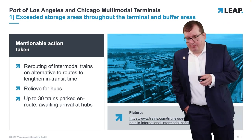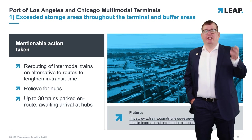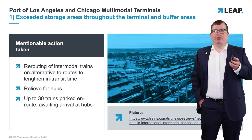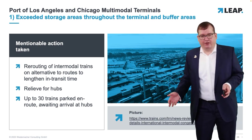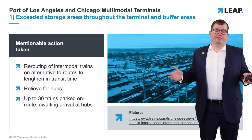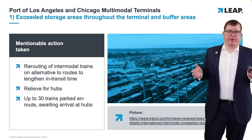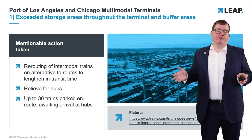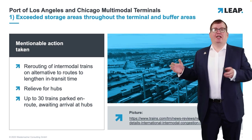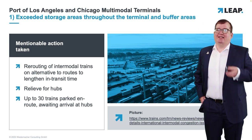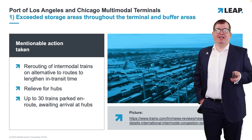What were the notable actions taken as relief for the hubs? On the spokes, there was rerouting of intermodal trains on alternative routes to lengthen the in-transit time. In total, up to 30 different trains were parked on route, just awaiting arrival at the hubs — kept in transit on the spokes to free up a little more space in the hubs themselves.